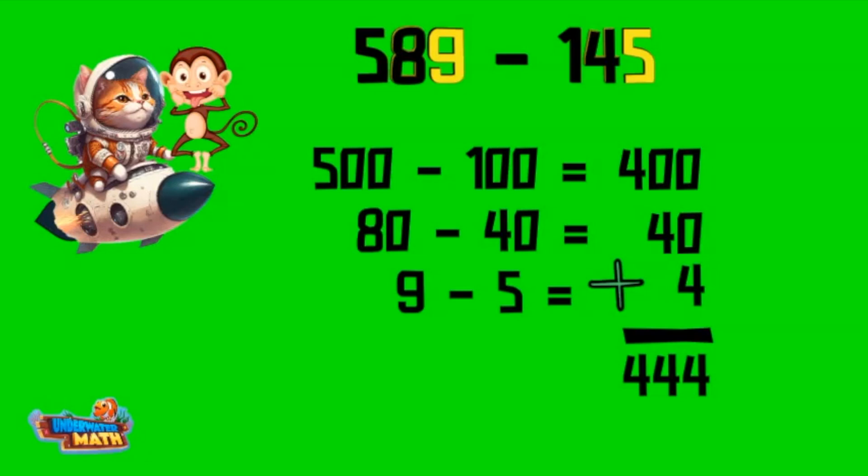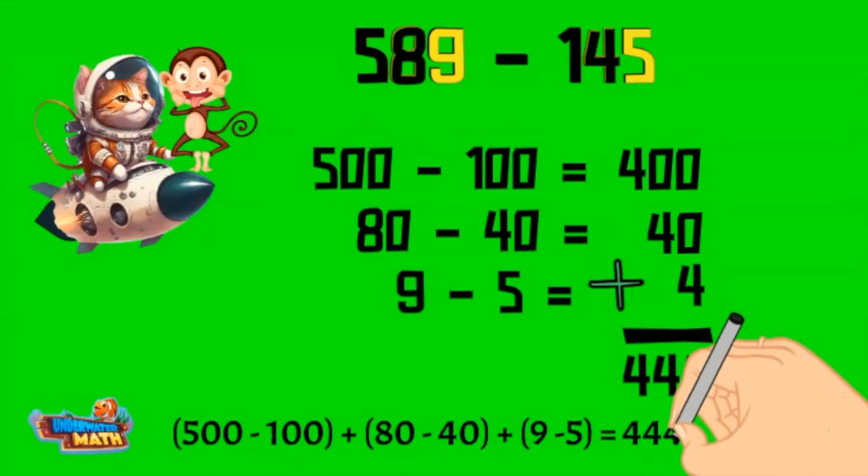The equation for this problem looks like this: 500 minus 100 plus 80 minus 40 plus 9 minus 5 equals 444.